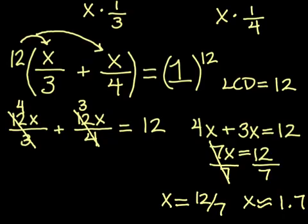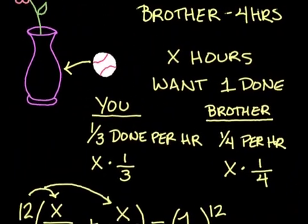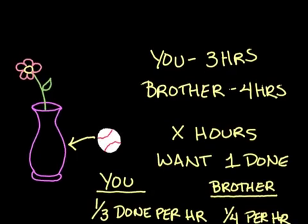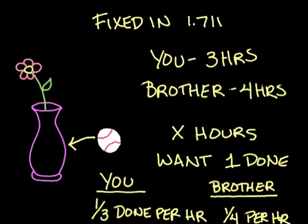So, looking at our original problem here, with you and your brother working together, though you have smashed your mother's favorite vase, you know that the two of you working together can fix it in 1.7 hours. Since your mother's not due to return until 2 hours, with just a few minutes to spare, it looks like you guys will be safe. Though I recommend you don't play baseball in the house anymore.